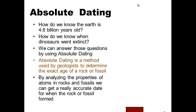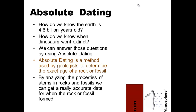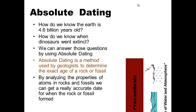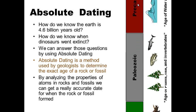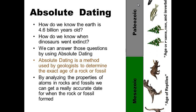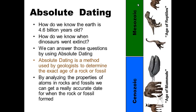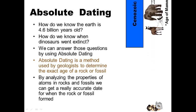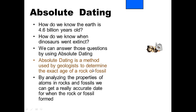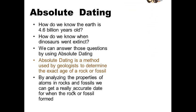How do we know the earth is 4.6 billion years old? How do we know when dinosaurs went extinct? We can answer all these questions because of absolute dating. Absolute dating is a method used by geologists and other scientists to determine the exact age of a rock or fossil by analyzing the properties of atoms in rocks and fossils, giving us a really accurate date for when the rock or fossil formed.